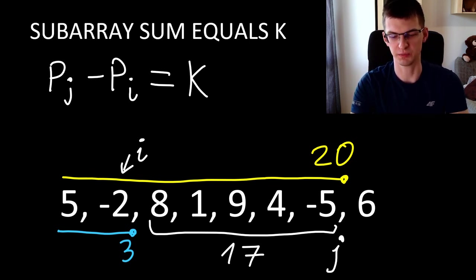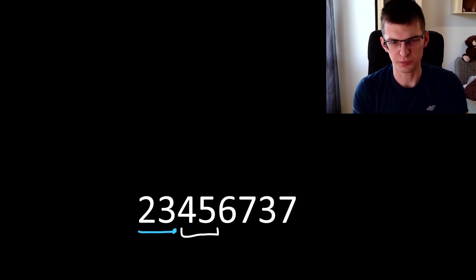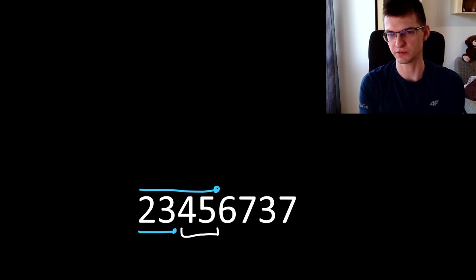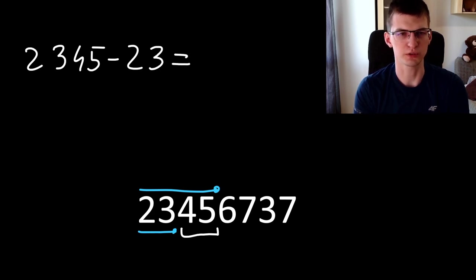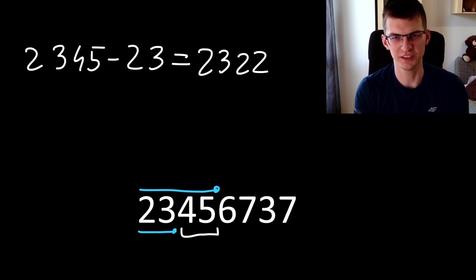We'll try to apply a similar thing here, but is it true that subarray is equal to a difference of two prefix sums in this case where we don't care about the sum of digits? We care about the value represented by something. This subarray is not 9, it is 45. If you try to say that this is 2345 minus 23, it's not true. What we get here is 2322, and this is not equal to 45.